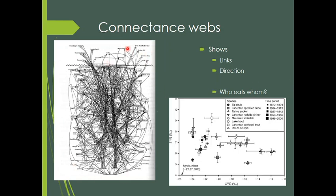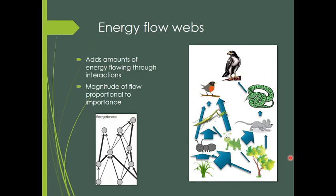This is generally what we think of as a connectance web. We'll spend some time later in the food web section looking at stable isotopes, and how a diagram showing various fish species can be a depiction of a connectance web. Connectance webs simply show who eats whom.